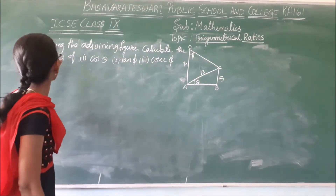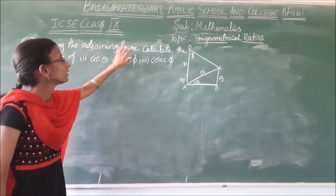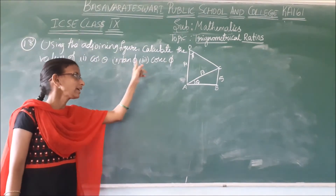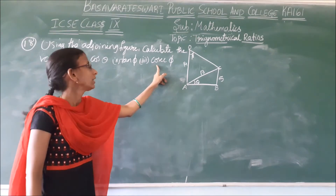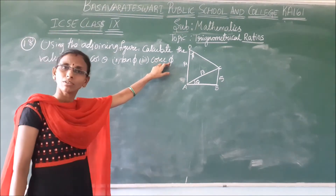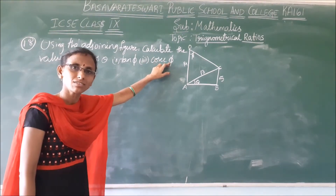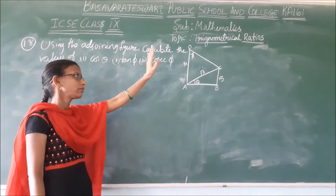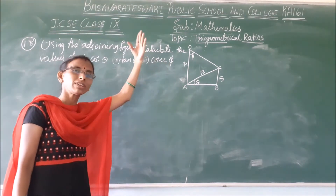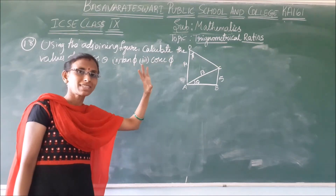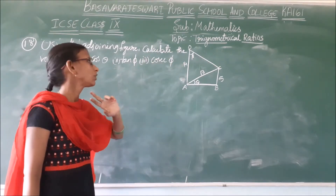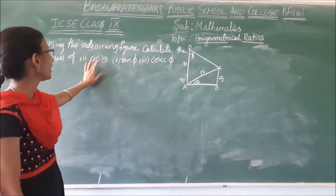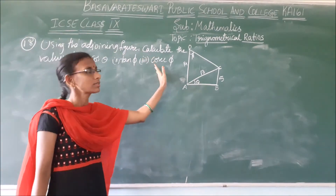Okay, what is the next problem? Using the adjoining figure, calculate the values of cos theta, tan phi and cosec phi. This symbol we pronounce as phi. It is one of the angles, like how we use theta. We have to calculate the values of cos theta and secant phi.